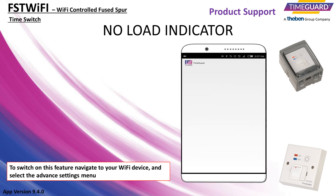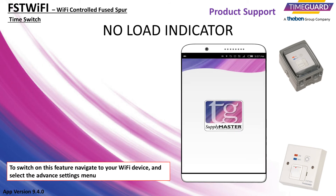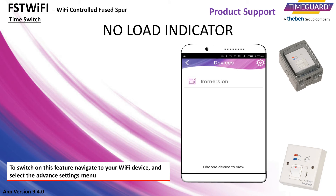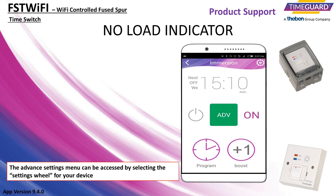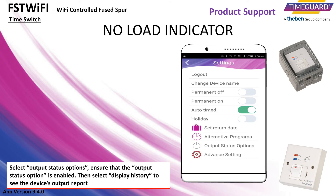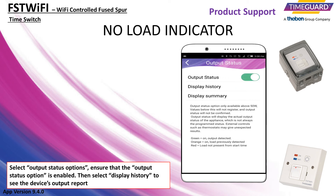To switch on this feature, navigate to your Wi-Fi device and select the Advanced Settings menu. The Advanced Settings menu can be accessed by selecting the Settings wheel for your device. Select Output Status Options and ensure that the Output Status option is enabled. Then select Display History to see the device's Output Report.